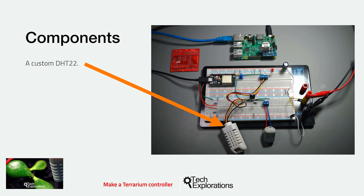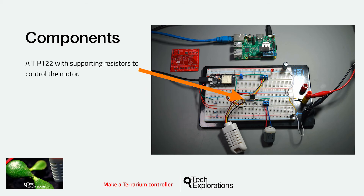To control the pump motor, I've chosen to use a TIP122 Darlington transistor along with a network of two resistors, one diode, and one capacitor. This configuration allows me to switch the motor on and off with only a small amount of current from the ESP32.